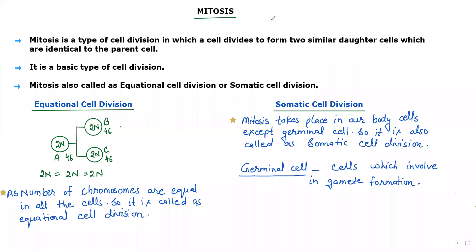Now let's see the second type of cell division, that is mitosis. Mitosis is indirect cell division. Mitosis is a type of cell division in which a cell divides to form two similar daughter cells which are identical to their parent cell. Two daughter cells are formed and the daughter cells are similar to their parent — it is the basic type of cell division.